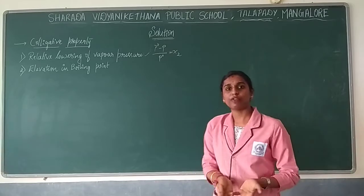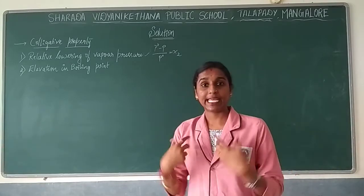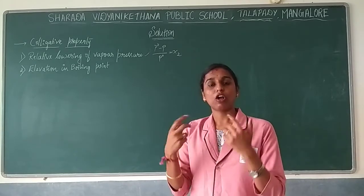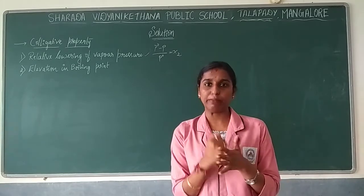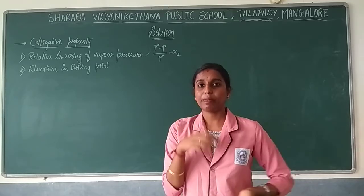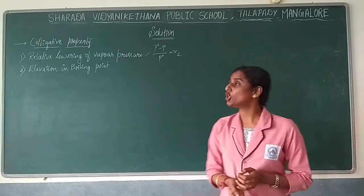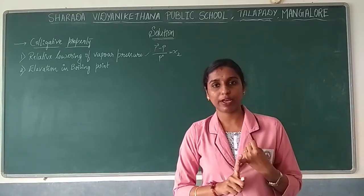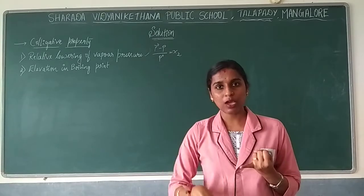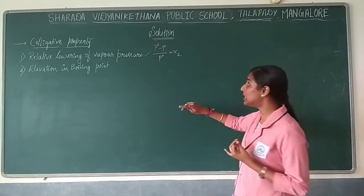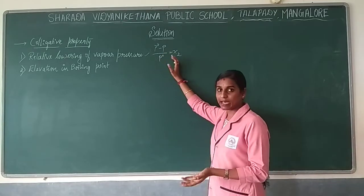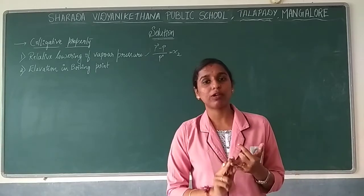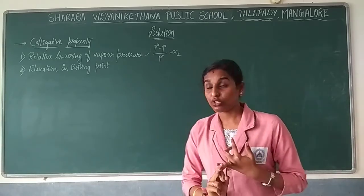For a dilute solution, the concentration of solute particles is very less, so N2 will be very less. You neglect N2 in the denominator, giving you N2 by N1. Substituting number of moles as mass divided by molar mass, you get a formula that can be used to calculate molar mass as well as the lowering of vapor pressure.